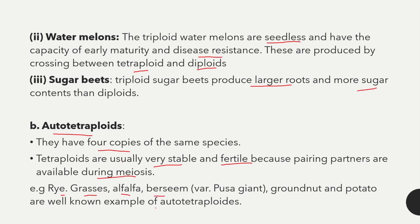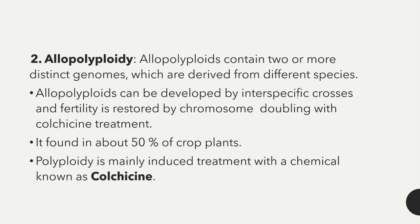The second type of polyploid is allopolyploid — a condition where two or more distinct genomes are present which are derived from different species. Allopolyploids can be developed by interspecific cross, meaning a cross between two different species. Their fertility is restored by chromosome doubling with colchicine treatment.